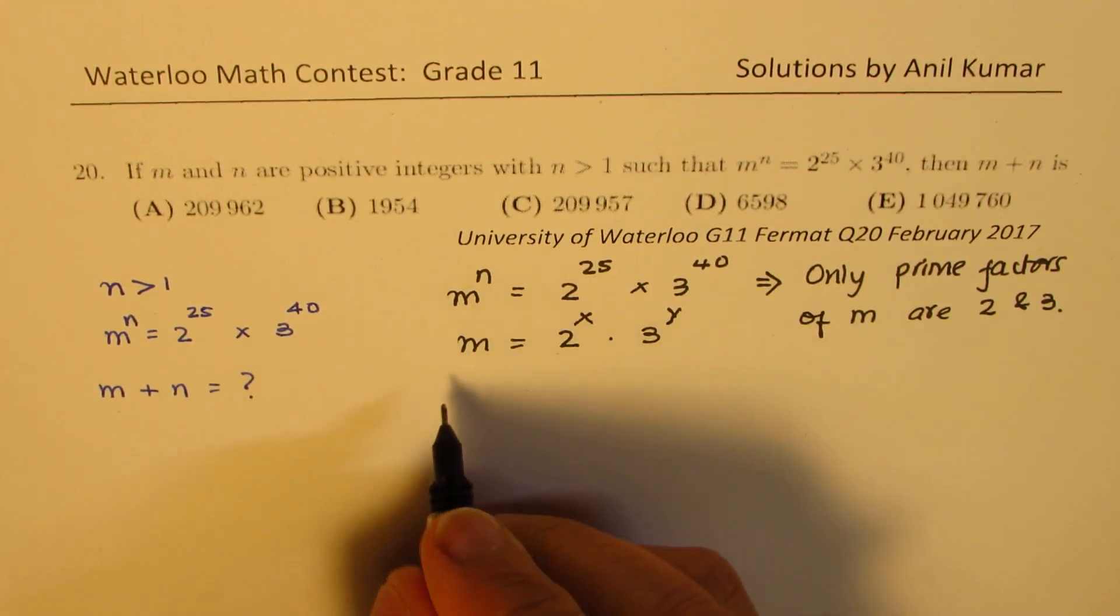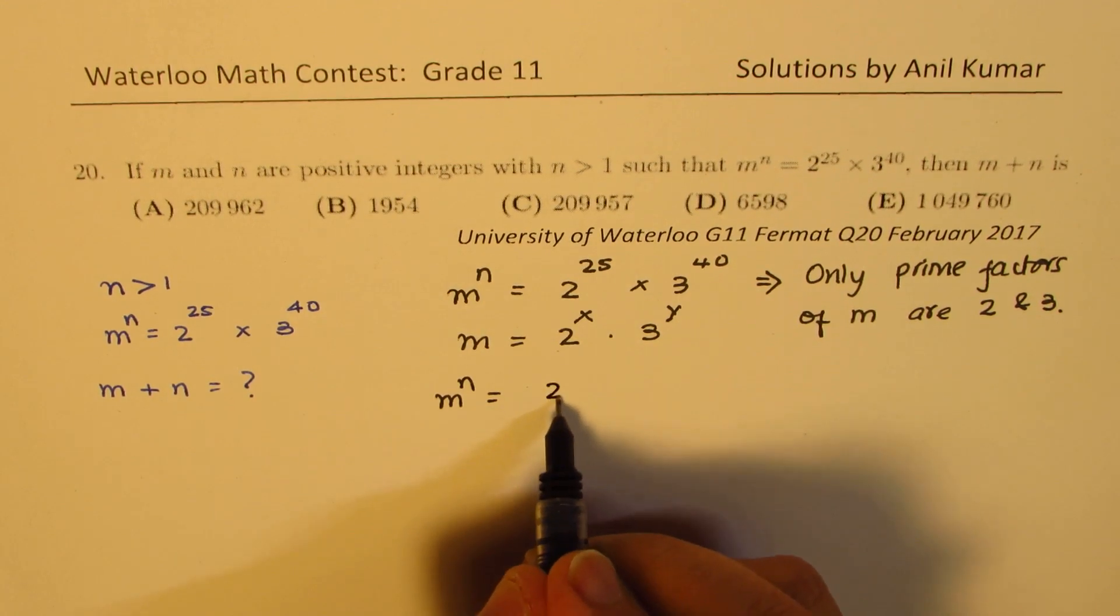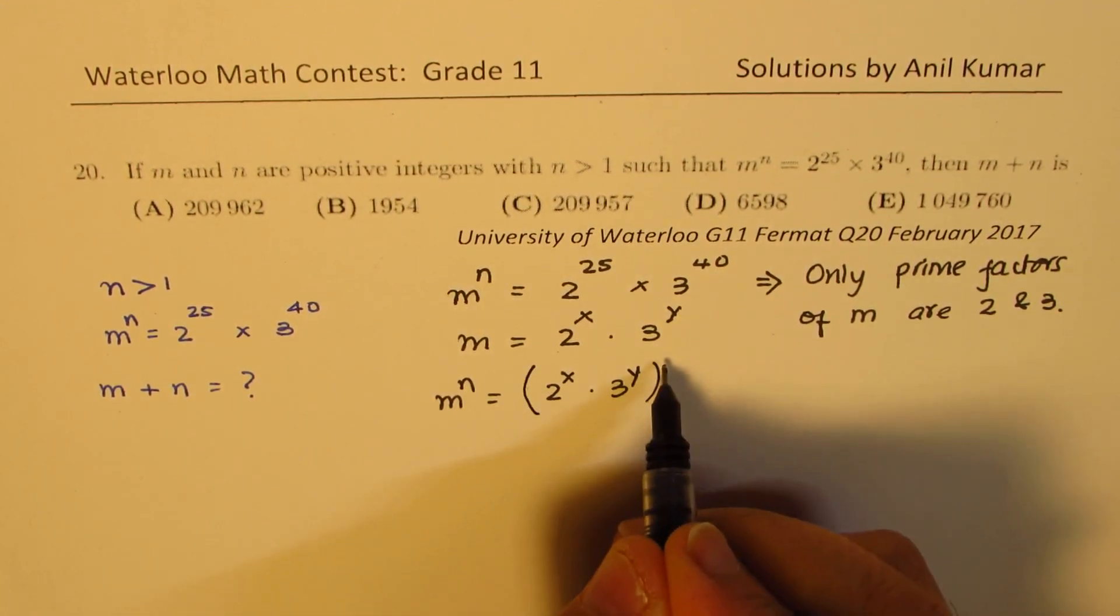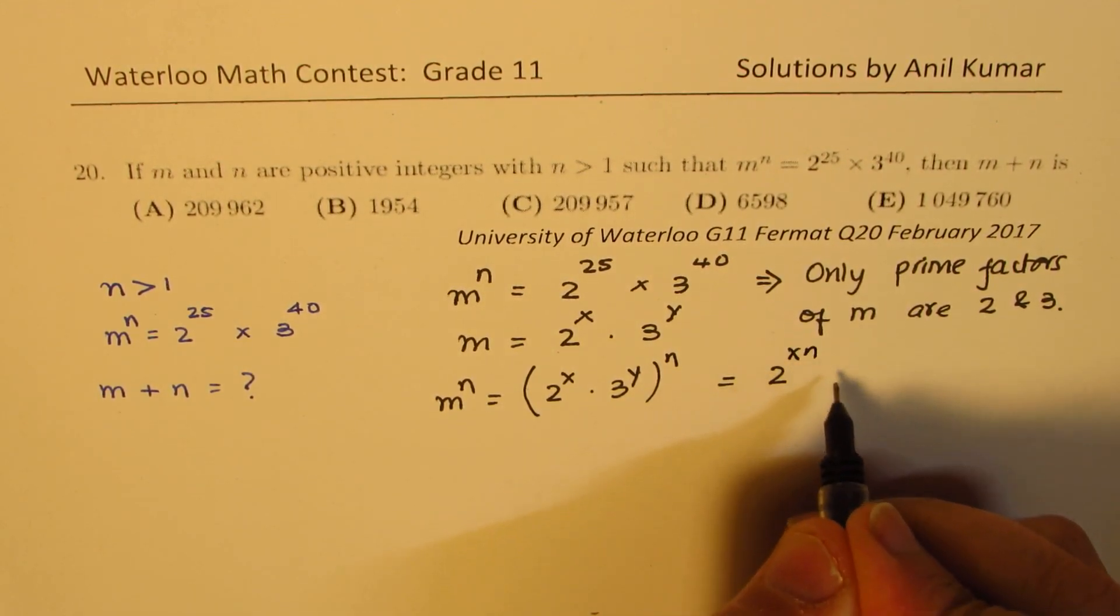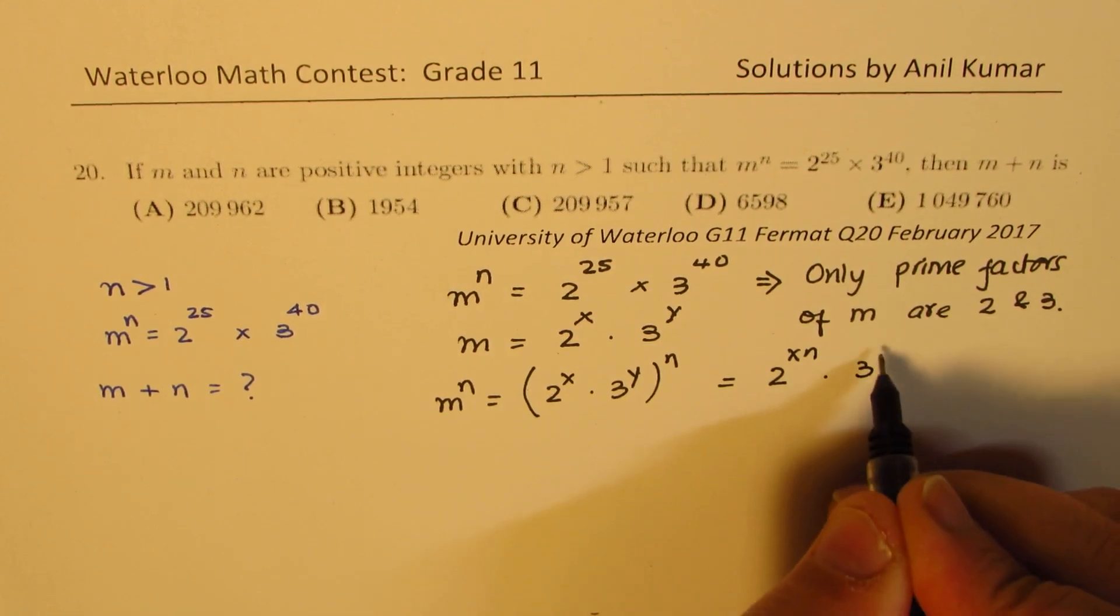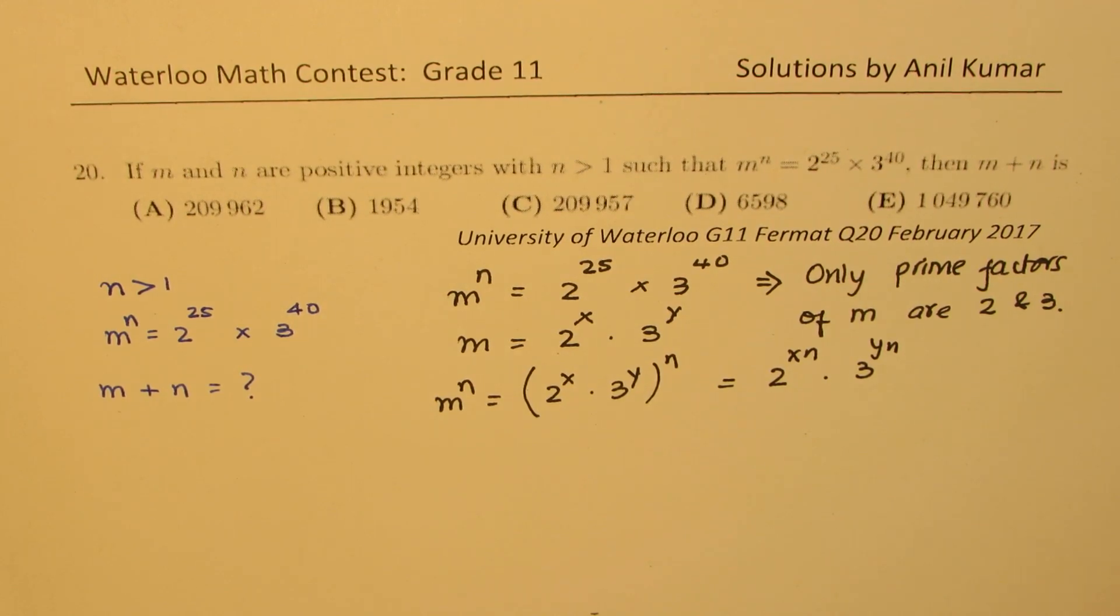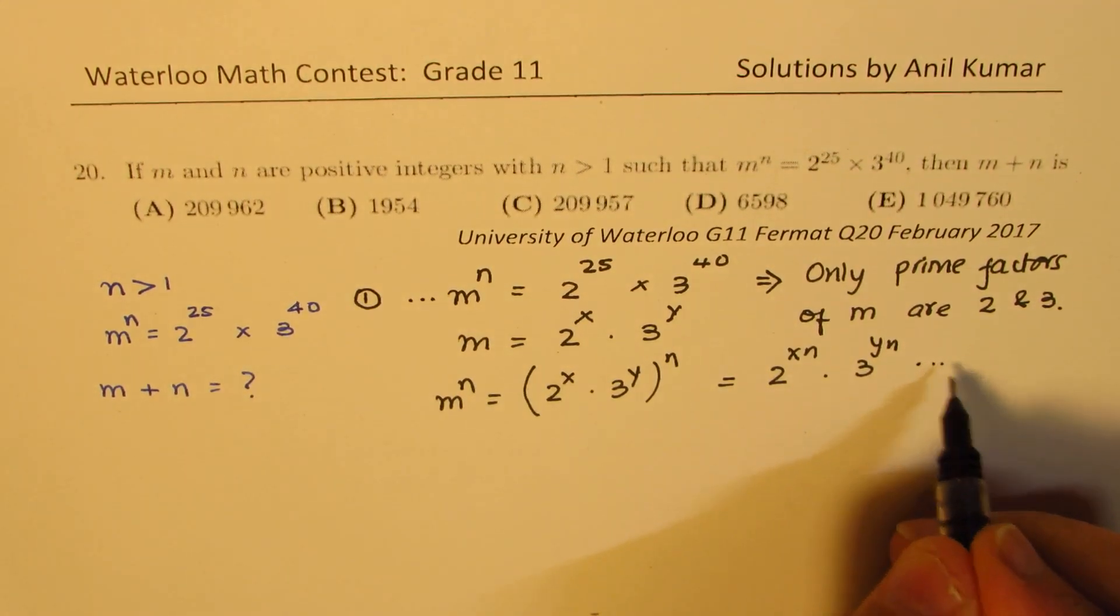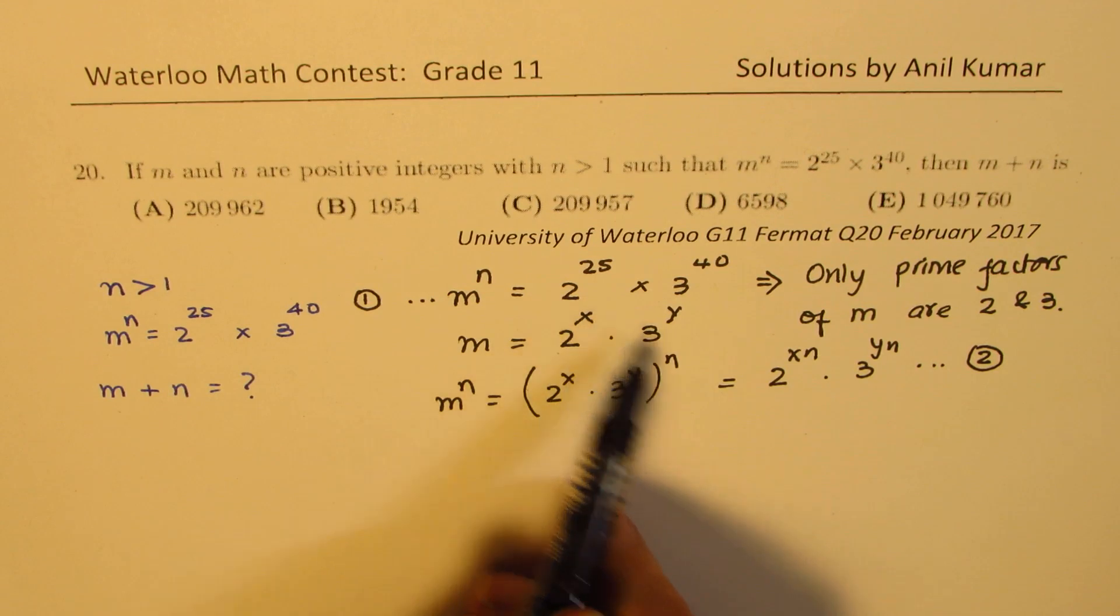Now, getting back to m^n is 2^x times 3^y to the power of n, which you could definitely write as 2^(xn) times 3^(yn).